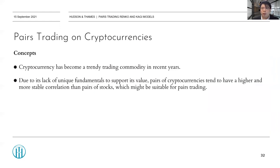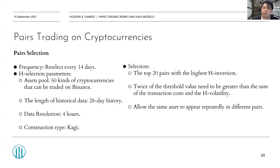We also apply similar strategies to cryptocurrencies. Why cryptocurrencies? They have become a trendy trading commodity in recent years, and due to a lack of unique fundamentals supporting their value, pairs of cryptocurrencies tend to have a higher and more stable correlation than pairs of stocks, making them potentially very suitable for pairs trading. The parameters: pairs are reselected every two weeks from a pool of 50 cryptocurrencies tradable on Binance, using 4-week historical data to count edge inversion and selecting the top 20 pairs. Here we do allow the same asset to appear repeatedly.